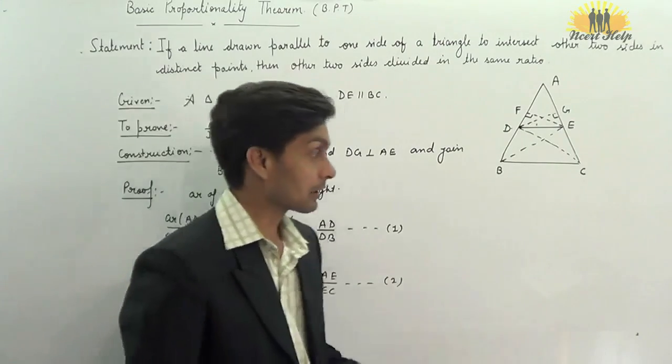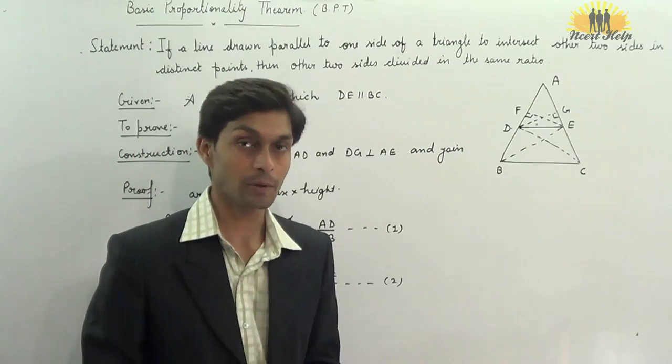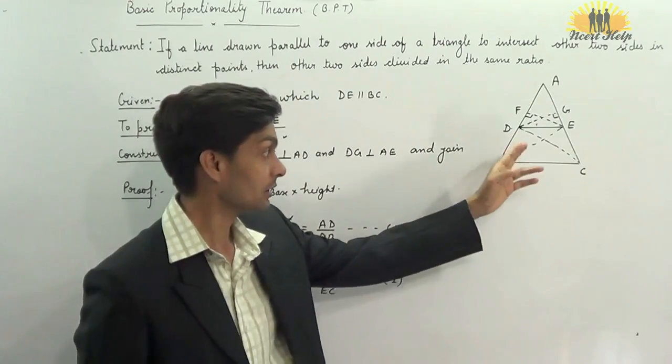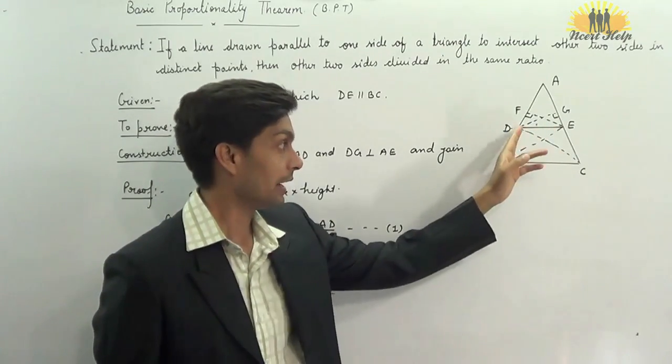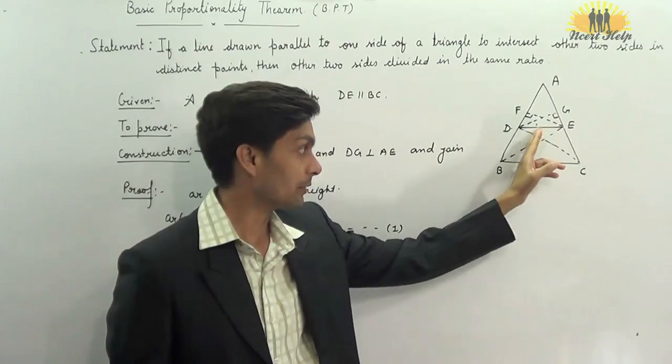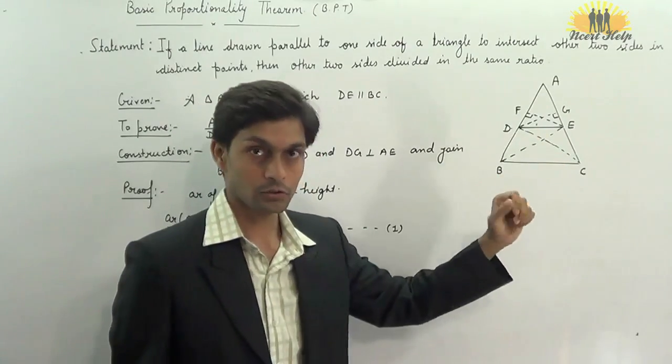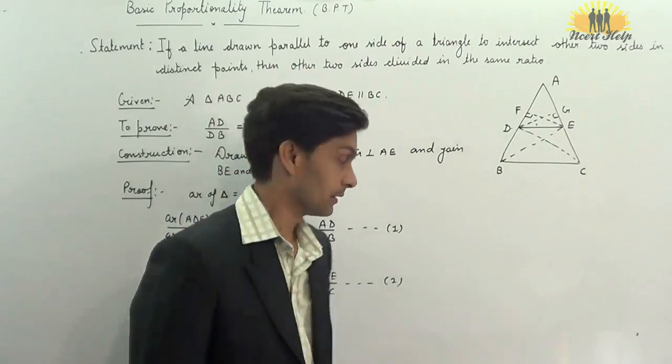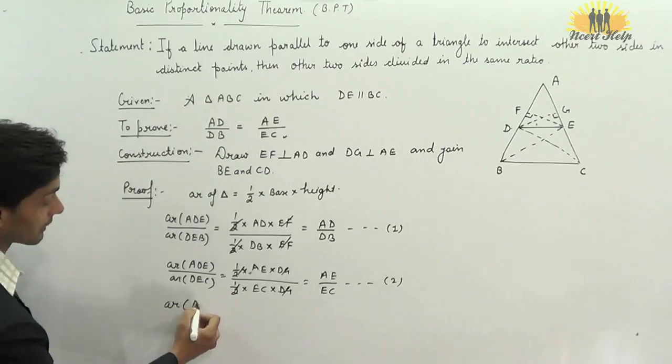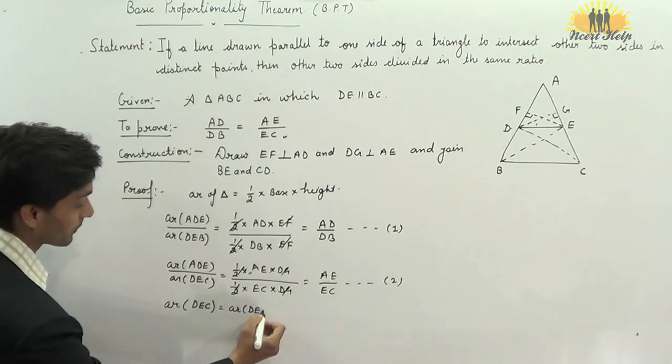Now, in earlier classes, we have learned that triangles on same base, which lie between same parallels, are always equal in area. Here in the diagram, we can see, triangle DEB and triangle DEC have common base DE, and both the triangles are lying between same parallel lines, DE and BC. So, they are equal in area. We will write that area of triangle DEC is equal to area of triangle DEB.